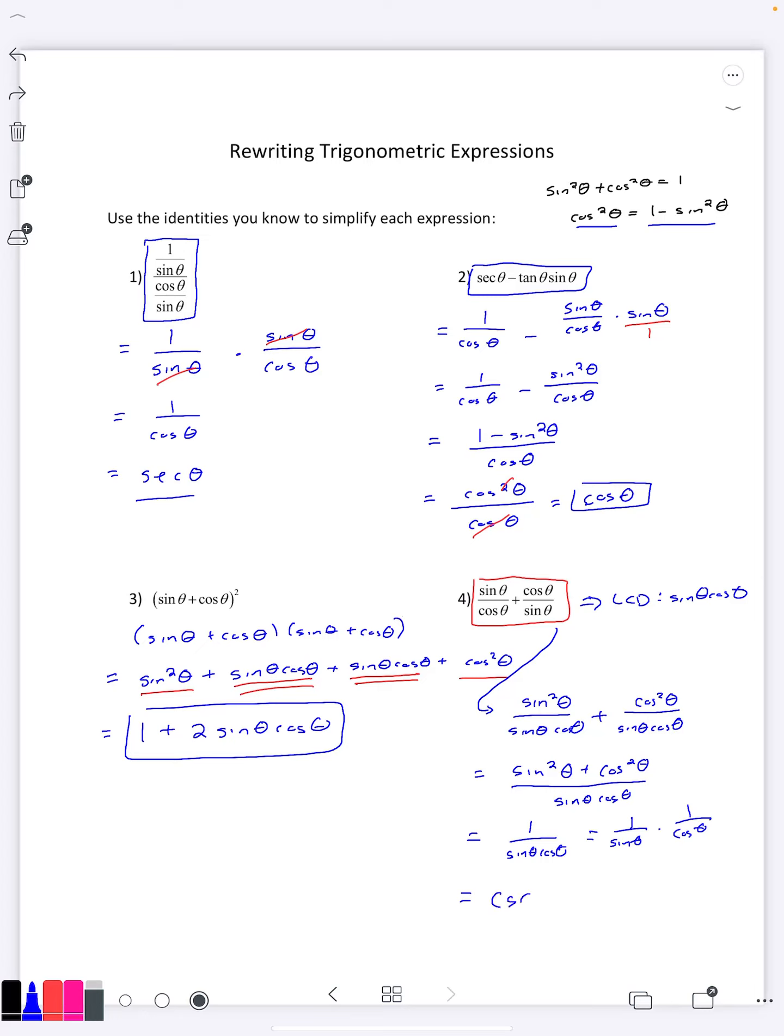One over cosine theta is secant theta, and this would be our final simplified answer here.